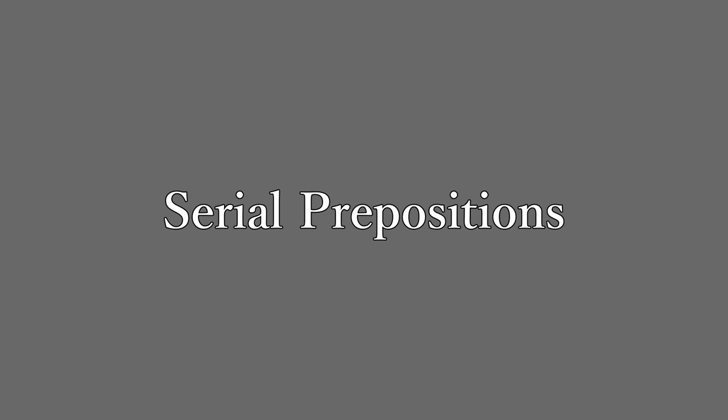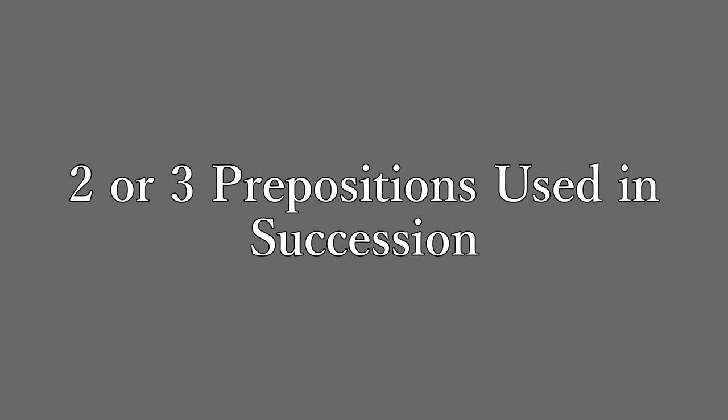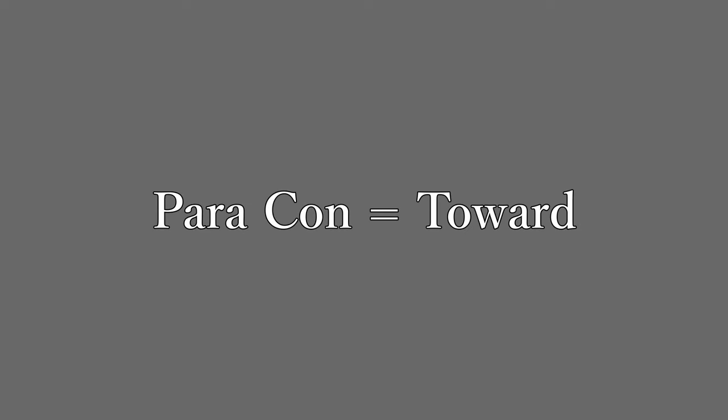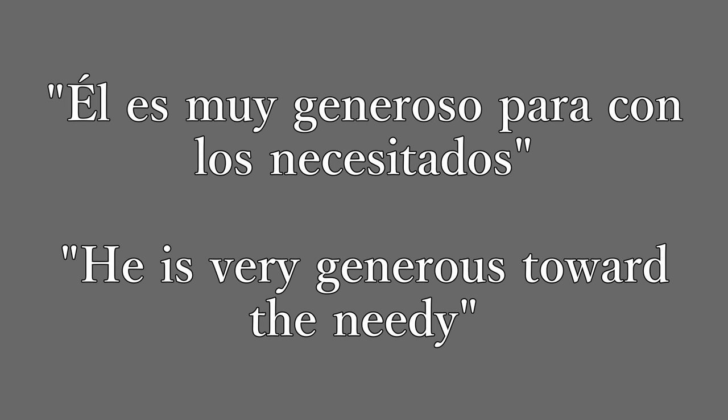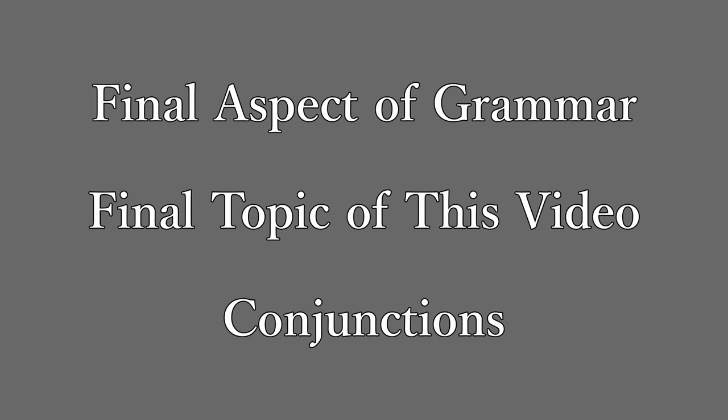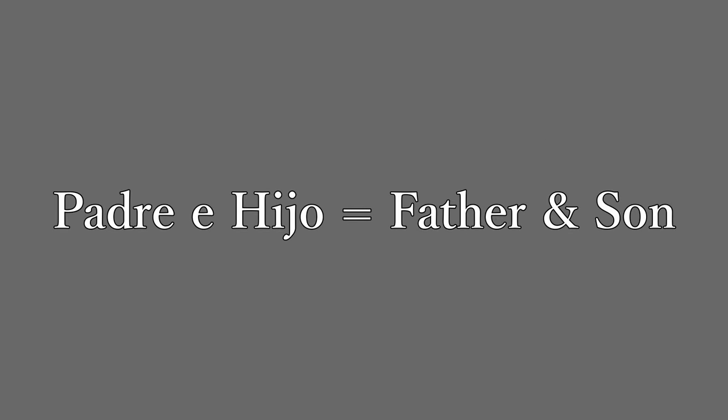Our final aspect of grammar is conjunctions. The Spanish conjunctions e and o alter their form when followed by an identical vowel sound. For e: padre e hijo — father and son. For o: sujeto u objeto — subject and object. Also, when between numbers, the conjunction o usually has an accent mark so as not to confuse it with the number zero — dos ó tres would be an example.